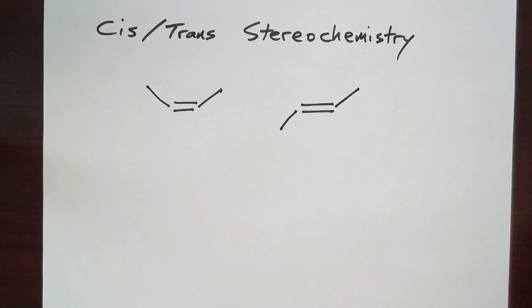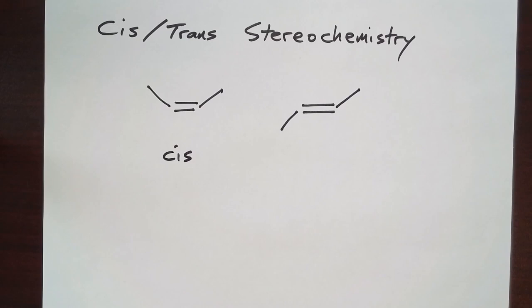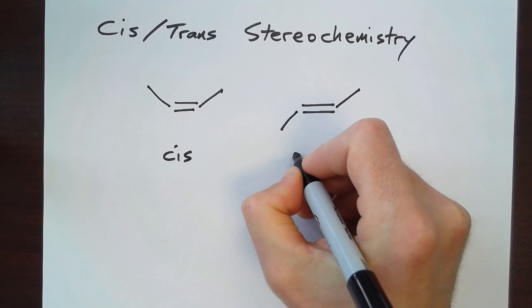If the substituents are on the same side, we say that it has cis-stereochemistry. If the substituents are on opposite sides, it has trans-stereochemistry.